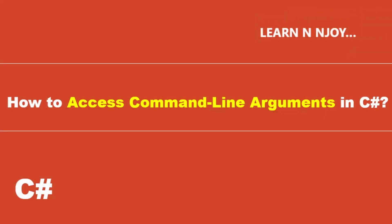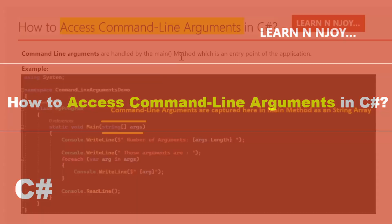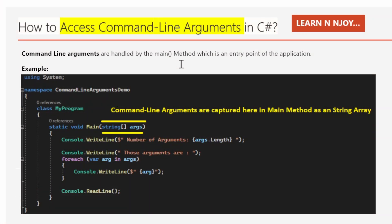How to access command line arguments in C#? Command line arguments are handled by the main method, which is the entry point of the application. Here I have created one console application that has a Program.cs file. In Program.cs there is a class MyProgram under namespace CommandLineArgumentsDemo, and this class has a main method which is the entry point.